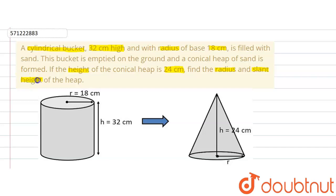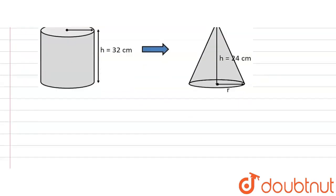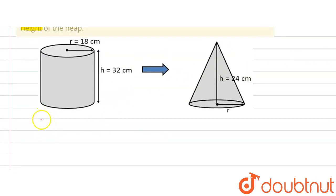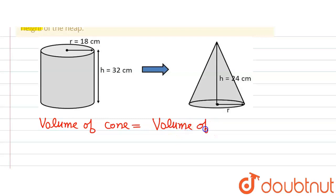The height is given and we need to find the radius and slant height of the heap. Since the cylindrical bucket is emptied and the conical heap is formed, the volume of the conical heap must be equal to the volume of the cylindrical bucket. So we can equate the volumes of these two figures and find the radius.